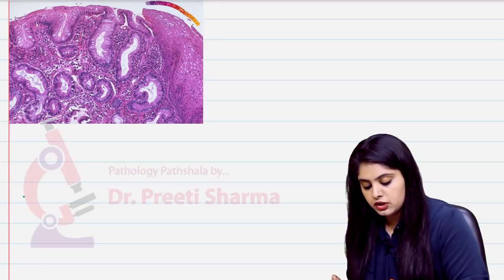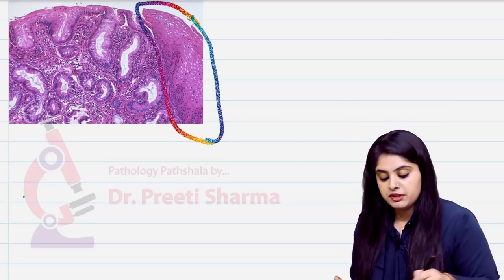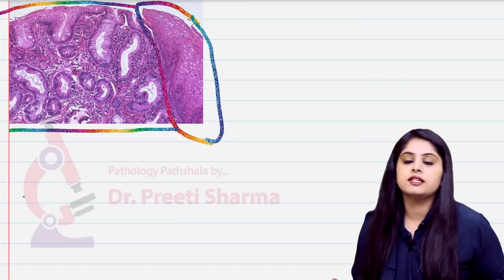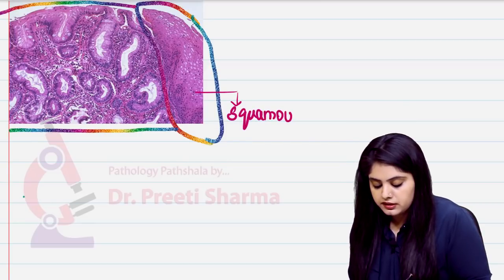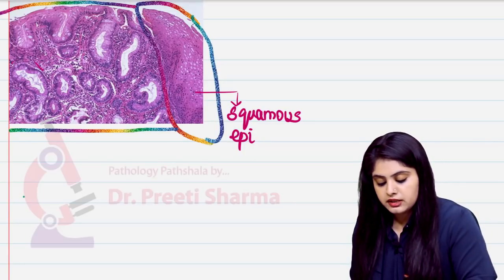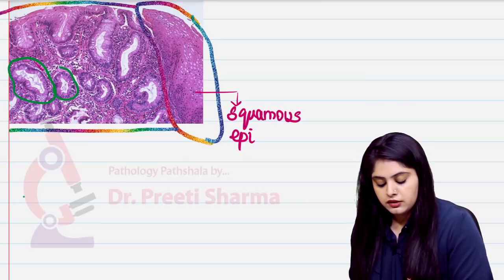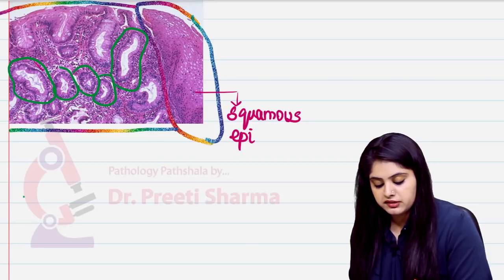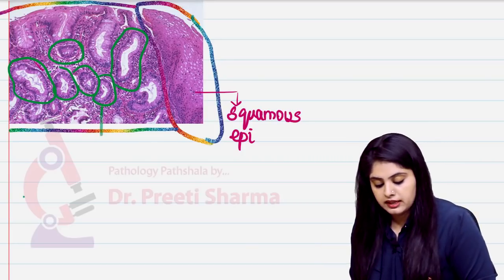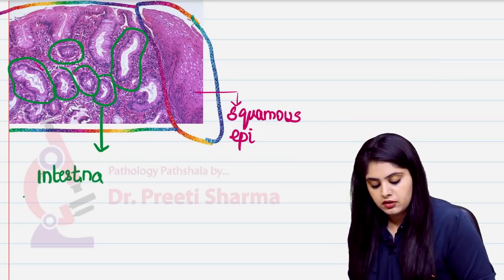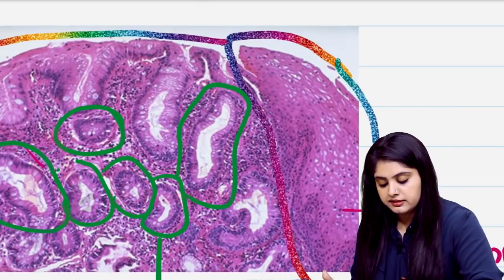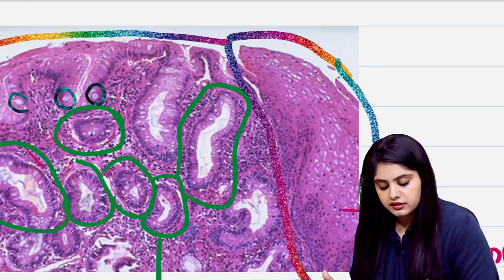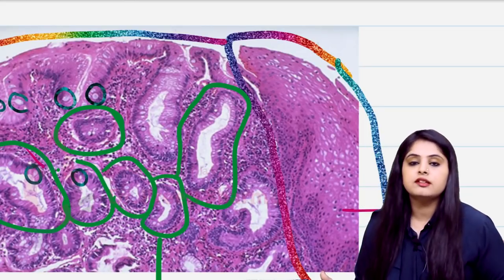On biopsy, one part of the image shows squamous epithelium, and the other shows glands — this glandular pattern represents the intestinal columnar epithelium. Zooming in, you can clearly see numerous goblet cells. The vacuoles — the round spaces — are the goblet cells, and they are filled with mucin.